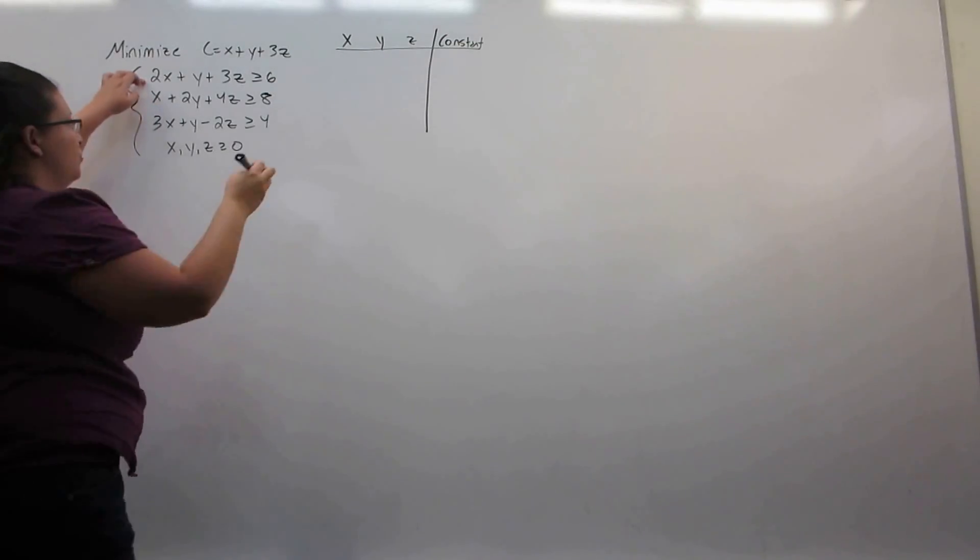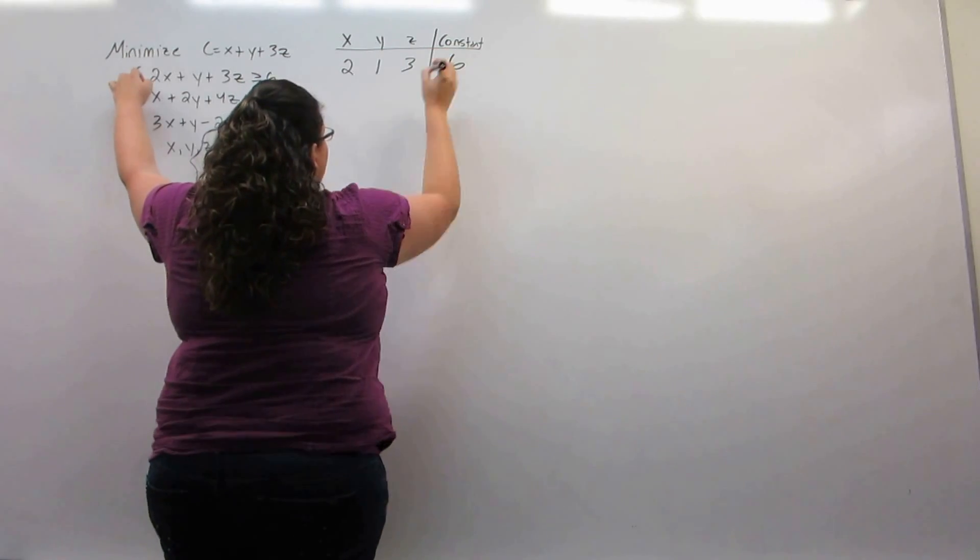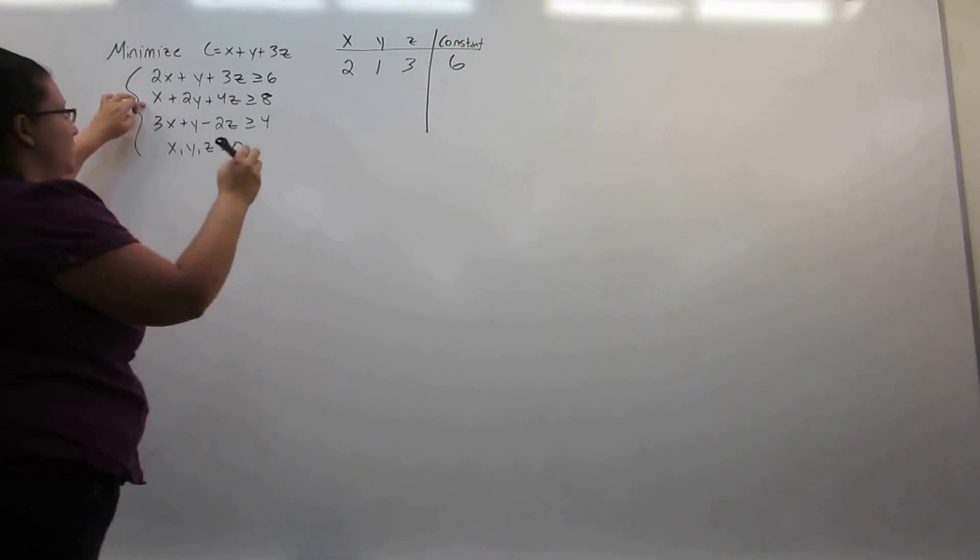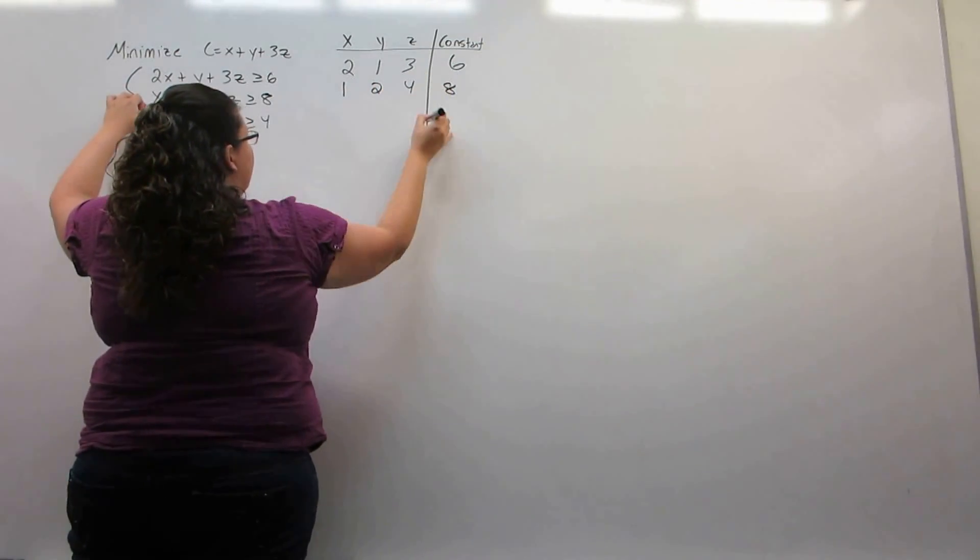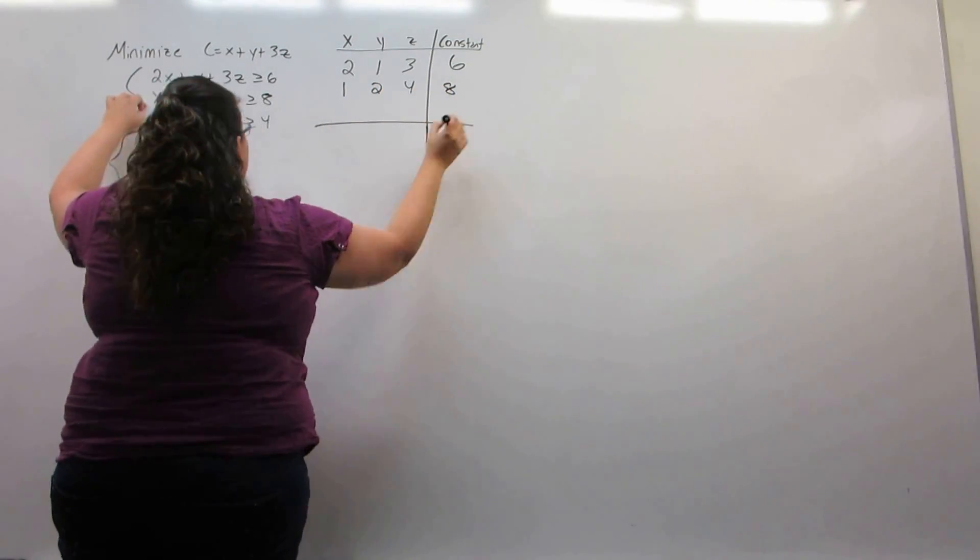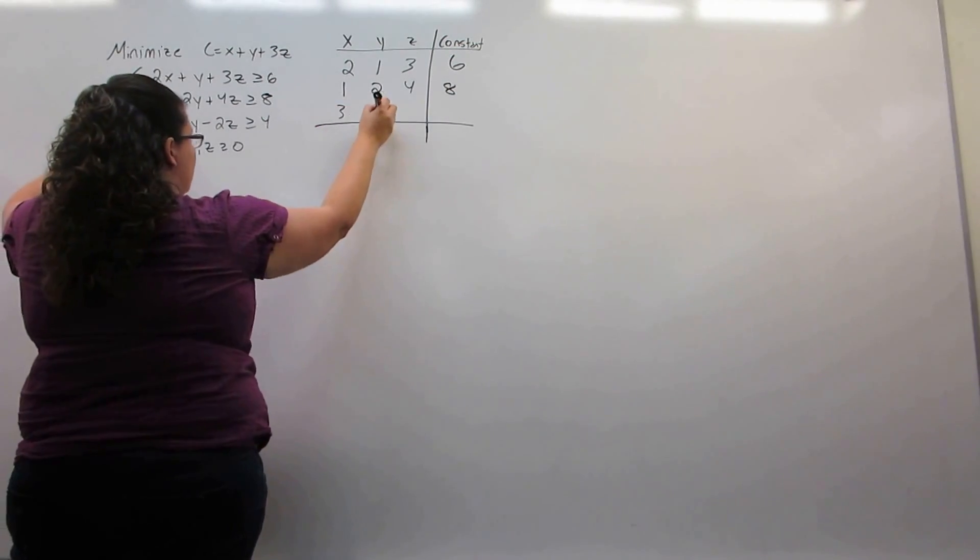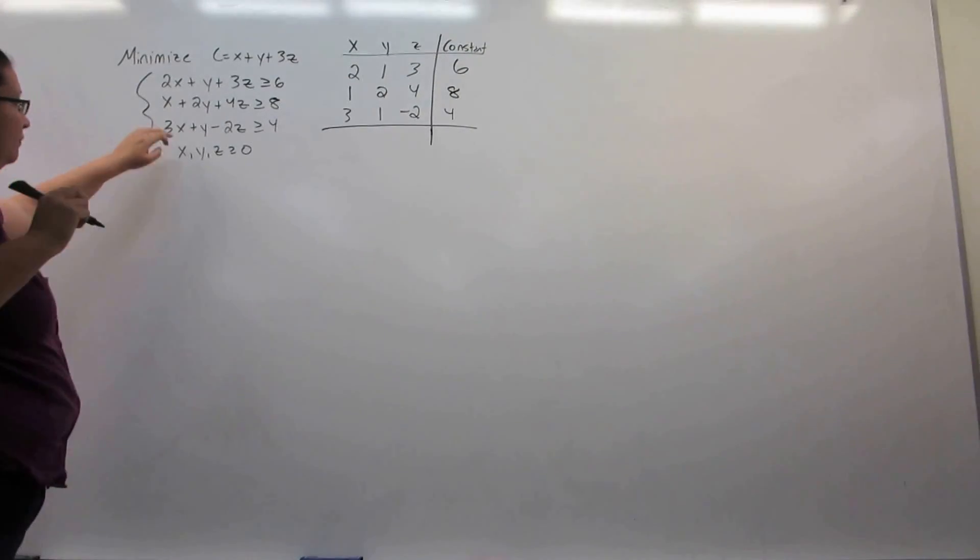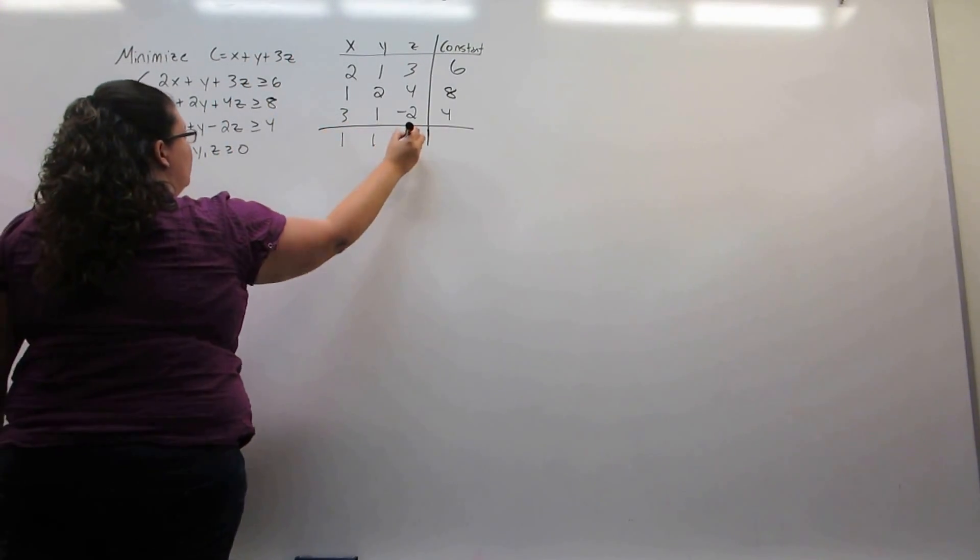The first constraint has coefficients 2, 1, 3, and right-hand side 6. The second constraint has coefficients 1, 2, 4, and right-hand side 8. The third constraint has coefficients 3, 1, negative 2, and right-hand side 4. And then the objective function has coefficients 1, 1, 3.